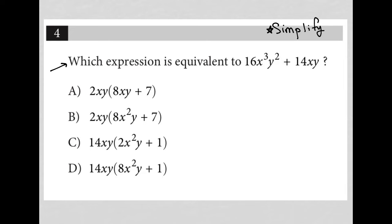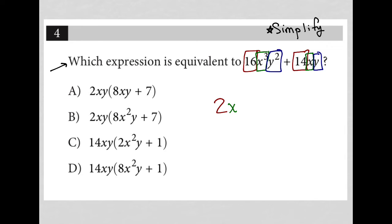What is the greatest common factor between 16 and 14 — the largest number that goes into both? That number is 2. Moving on to our x terms: the largest common factor between x³ and x is x. And the greatest common factor between y² and y is y. So we've found our GCF.